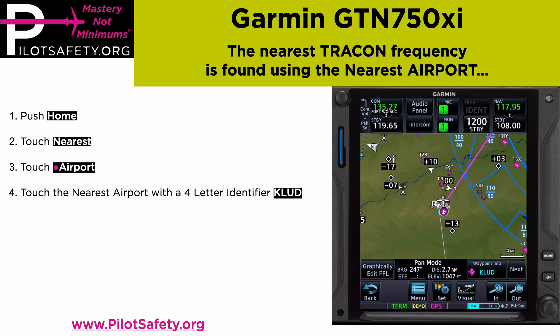Many of the private airports that only have three characters don't have instrument approaches. Therefore, they will not show the nearest approach and departure frequency. Instead of trying one and going back repeatedly, it's much quicker just to look for the nearest four-letter identifier airport, because almost all of them have approaches.